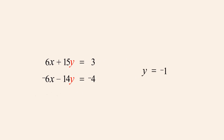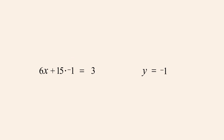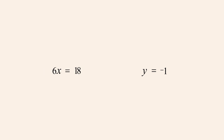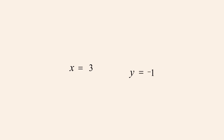The value of y in either equation can then be set to negative 1 and the equation solved for x. Replacing y in the top equation with negative 1, we complete the arithmetic, multiplying 15 times negative 1 to get negative 15. Adding 15 to both sides, we have 6x equals 3 plus 15, or 6x equals 18. Dividing by 6, we get x equals 18 over 6, or 3. So the values of x and y which simultaneously solve both equations are 3 and negative 1.